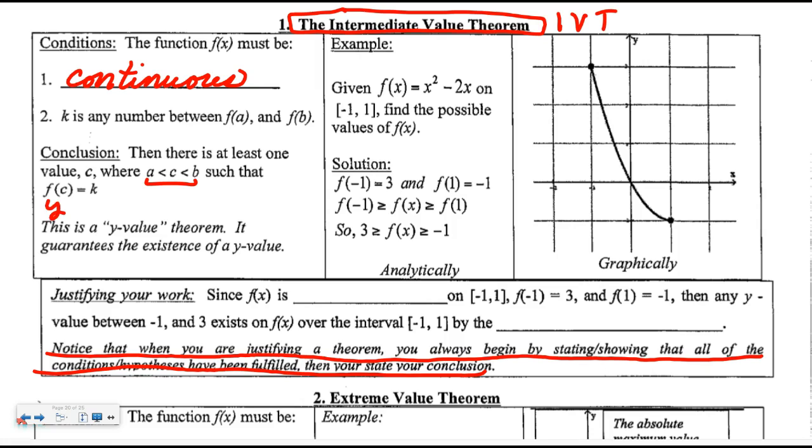Remember f of is a y-value. So k can be any number between these two y-values. Think about temperature at certain times - a could be time one and b would be time two. f of a would be the temperature at time one, let's say 30 degrees, and f of b would be the temperature at time two, let's say negative 10. What it's saying is that k is any y-value between those. If I'm connecting them without lifting my pencil, which means in a continuous fashion, then I have to hit every temperature between 30 and negative 10.